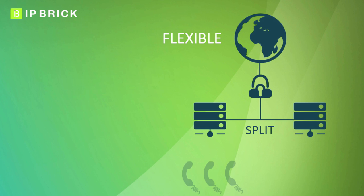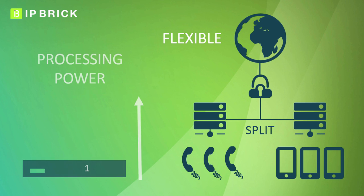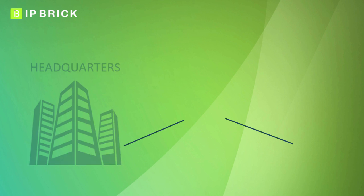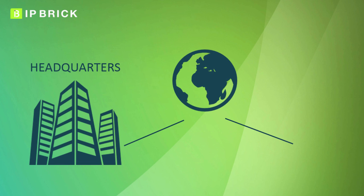For example, by separating IP phone calls from mobile phone calls using SBC security barriers to the external world. But it's also flexible because it's possible to increase the processing power of the existing server unit. It's easy to deploy, for example, a secure telephony network to branch offices around the world, because it is based on a private cloud infrastructure.